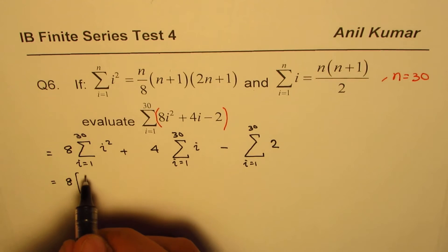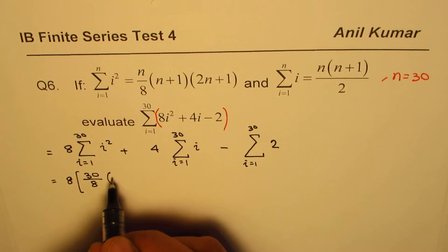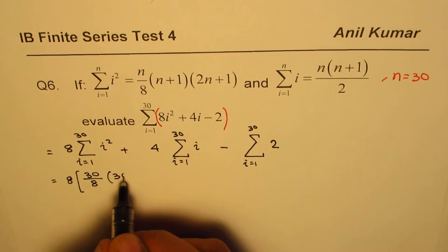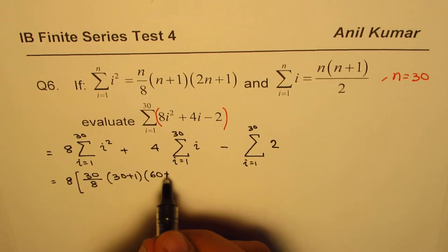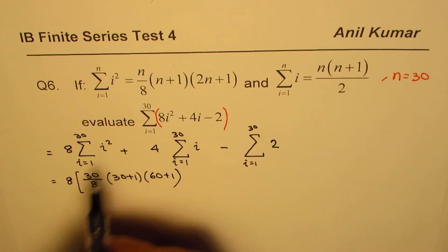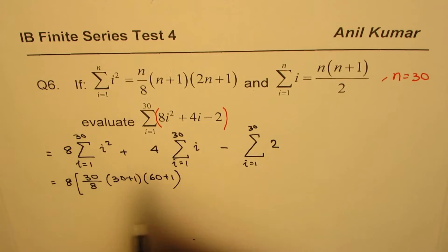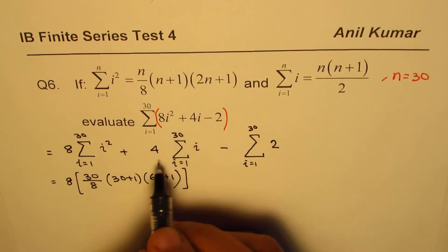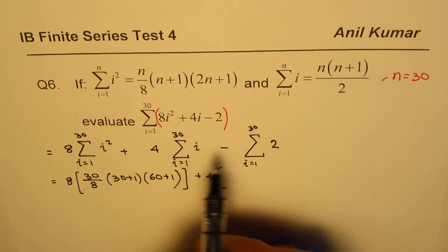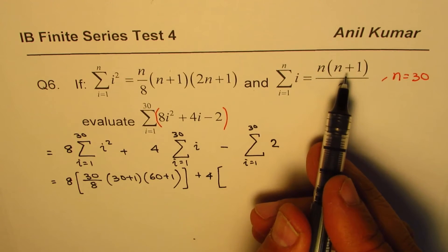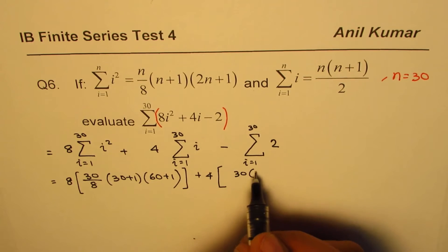Replacing n with 30: we have 30 over 6 times (30+1) times (2×30+1), which is 61. So that gives us the sum of i² from 1 to 30. Then we have plus 4 times the sum of i, using the formula with n = 30: 30 times (30+1) divided by 2.